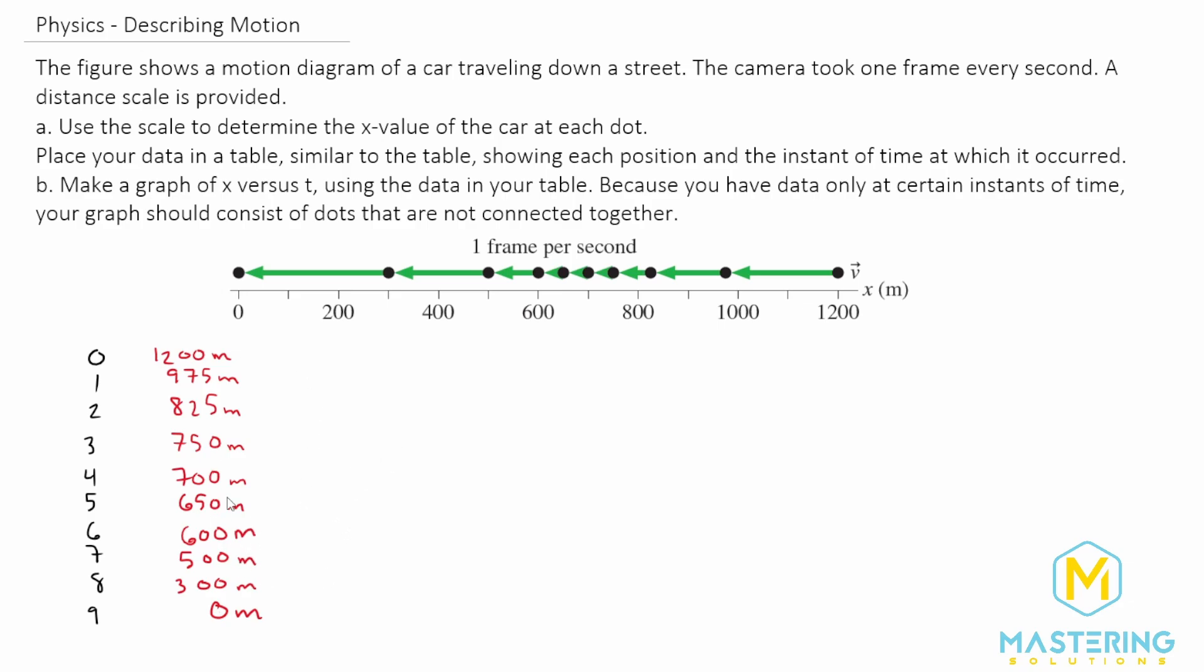All right, so now we have our table data. So that is part A. Now we need to make the position versus time graph.